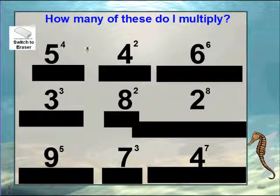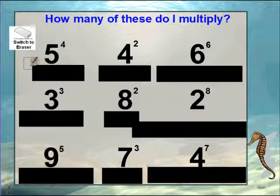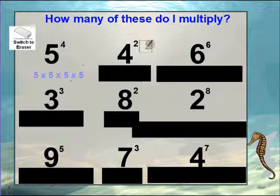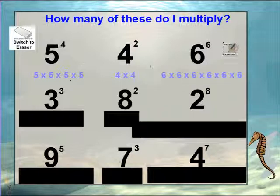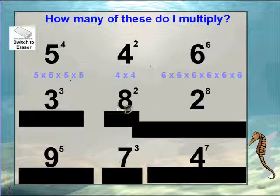So let's do a couple of these together, and then I want you to try it yourself. We have five to the fourth — five is our base, four is our exponent, so this means I'm going to have four fives multiplied together. Four to the second power — four is our base, two is the exponent, so we're going to have two fours. And six to the sixth — six is our base, six is the exponent, so we're going to have six sixes. Go ahead and pause this, write down what each exponent expression means, then push play when you're ready.